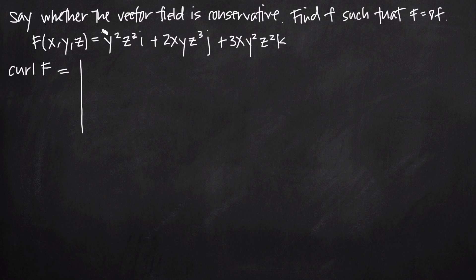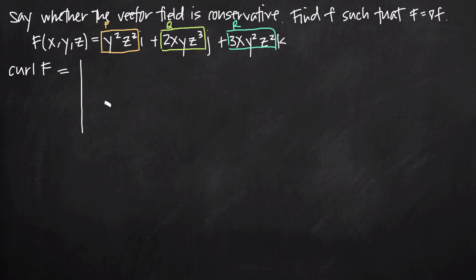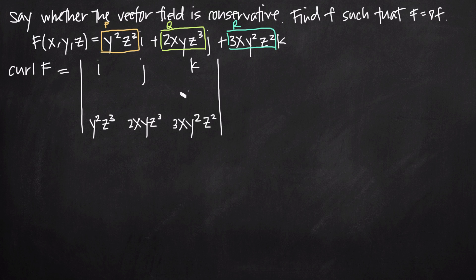We're going to calculate curl of F using a 3×3 matrix formula, taking values out of the vector field equation. The coefficient on i is a function we call P, the coefficient on j is a function we call Q, and the coefficient on k is a function called R. In the third row of our matrix we put P, Q, and R in order: y²z³, 2xyz³, and 3xy²z². The first row is always i, j, k, and the second row is the partial derivatives with respect to x, y, and z.